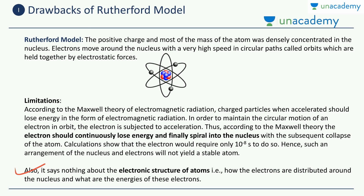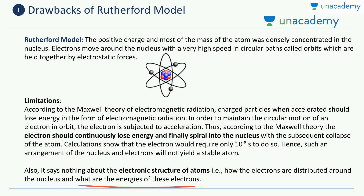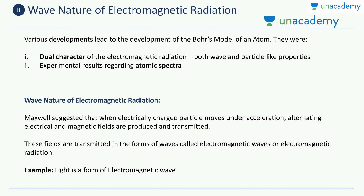Another limitation of the Rutherford model is that it says nothing about the electronic structure of the atoms — how the electrons are distributed inside the atom, how the electrons are distributed around the nucleus, and what are the energies of these electrons. The Rutherford model doesn't solve this problem. So this led to the development of a different model, which is the Bohr's model.